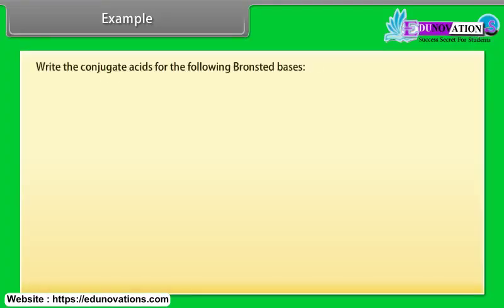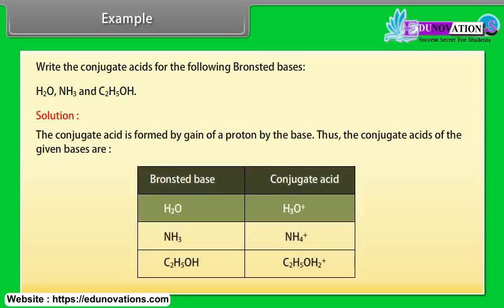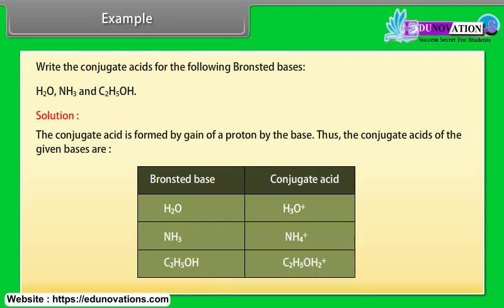Example: Write the conjugate acids for the following Bronsted bases: H2O, NH3, and C2H5OH. The conjugate acid is formed by gain of a proton by the base. Thus the conjugate acids are: for H2O, H3O+; for NH3, NH4+; for C2H5OH, C2H5OH2+.